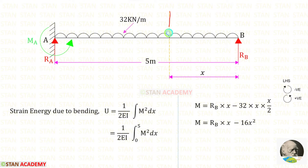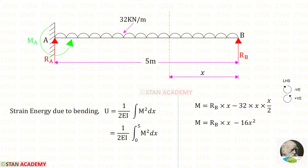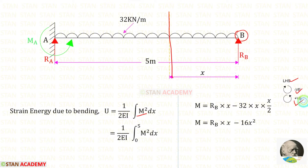I have made a section at a distance of X from point B. In the strain energy formula, the limits for integration are 0 to 5. Let us find the moment M — that is, the moment about the section. We are going to find the moment from point B. In this case we are using the left-hand side rule: clockwise will be negative and anticlockwise will be positive.